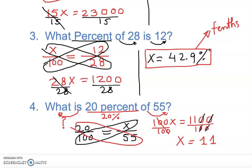The answer is 11 — no percentage symbol, because the question already gave us 20% and asks 'what is,' not 'what percent.' So 11 is 20% of 55. I hope you understand. If you like it, please share, comment, and subscribe. Thank you.